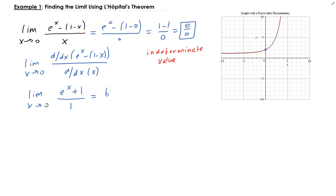This gives us the limit of e^x plus 1 as x approaches 0. Plugging in 0, you get e^0 plus 1. Since e^0 is 1, you end up getting the value of 2.